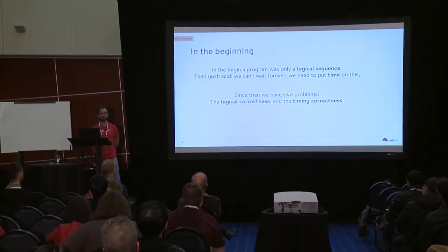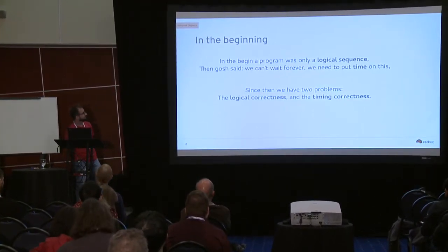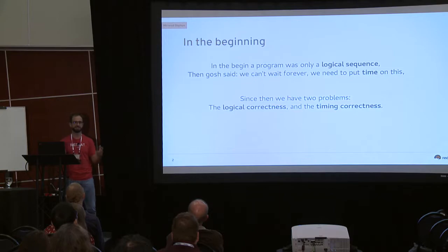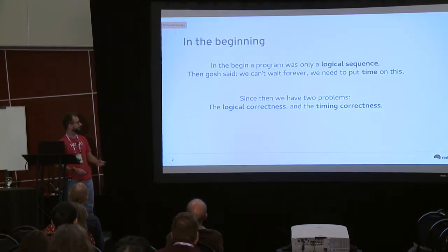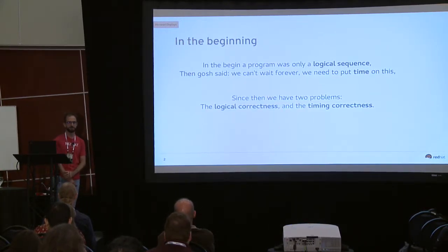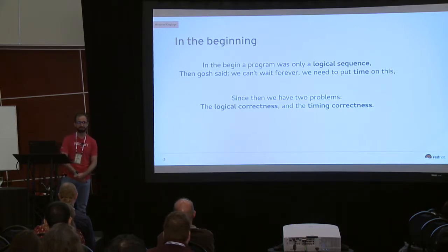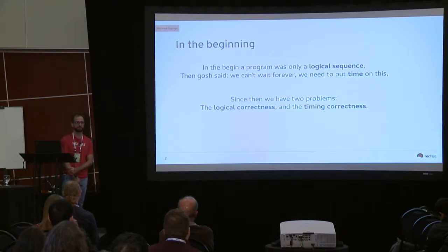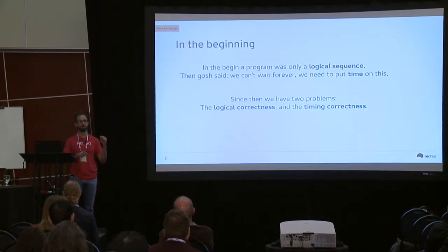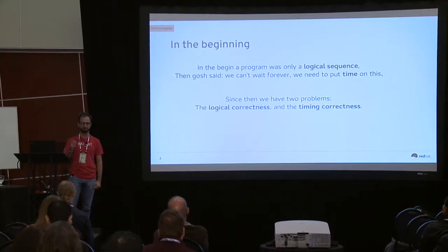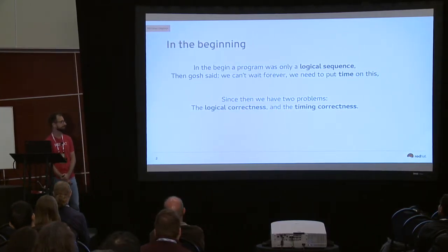At the beginning, computers had software and a logical sequence to follow, and correctness was about the logical sequence of things. But then someone said we cannot wait forever — we have to finish before a deadline. And then we have the theory of real-time systems, in which correctness does not depend only on logical correctness, but also on the timing behavior of the system and the response time of a real-time task.